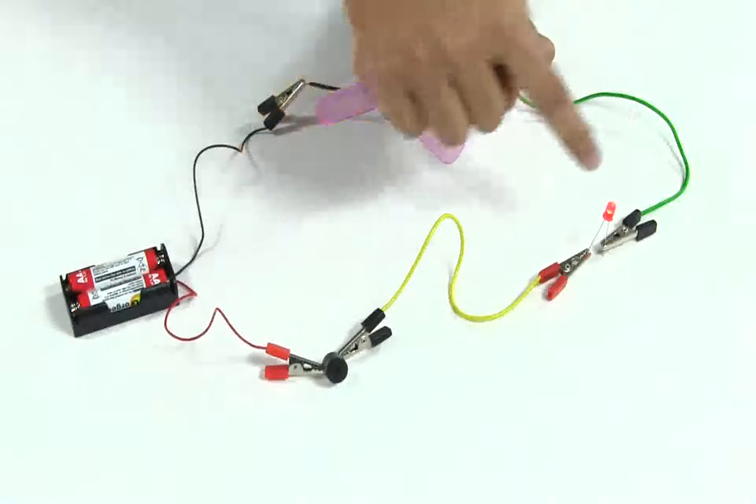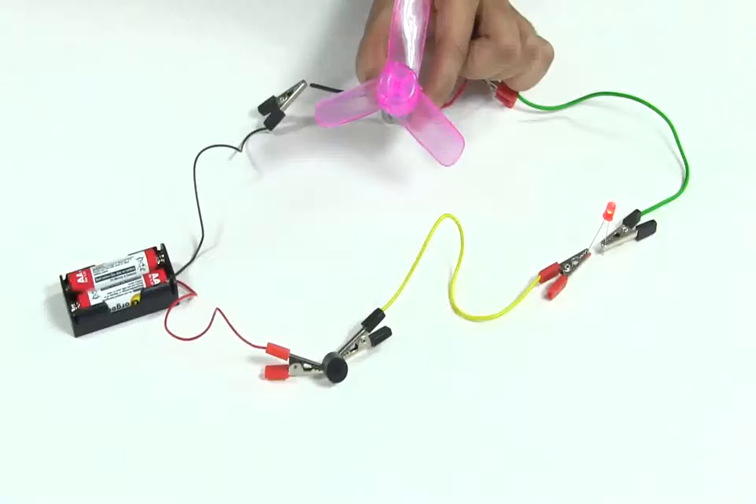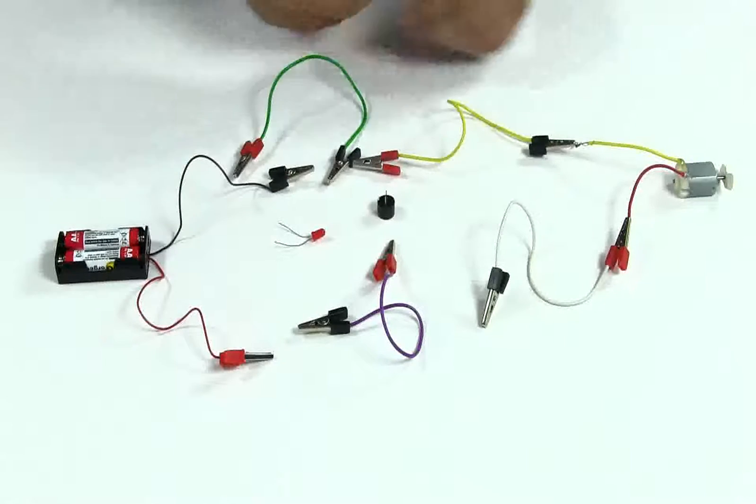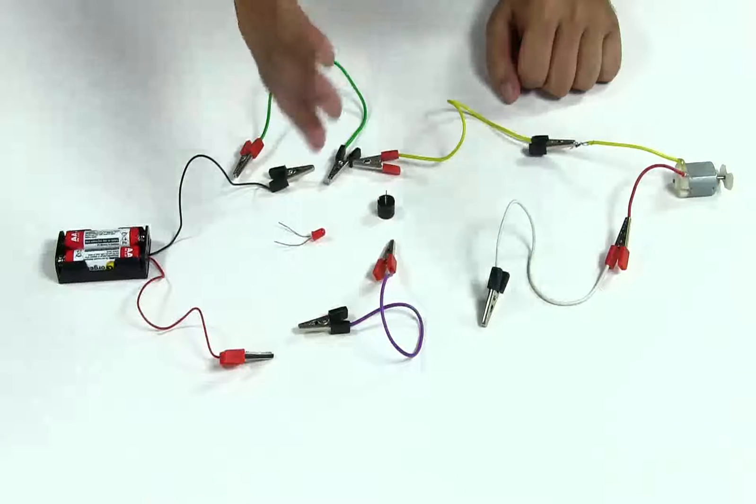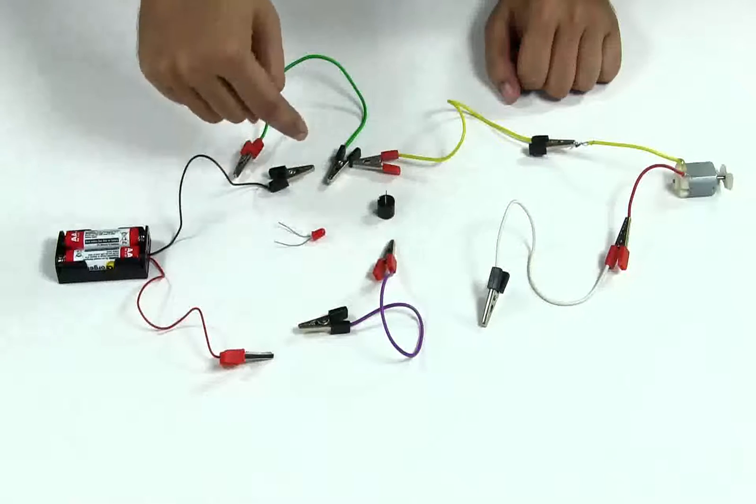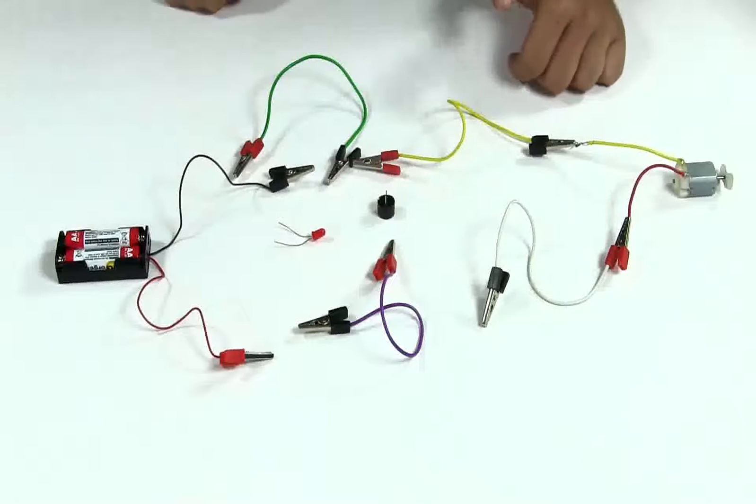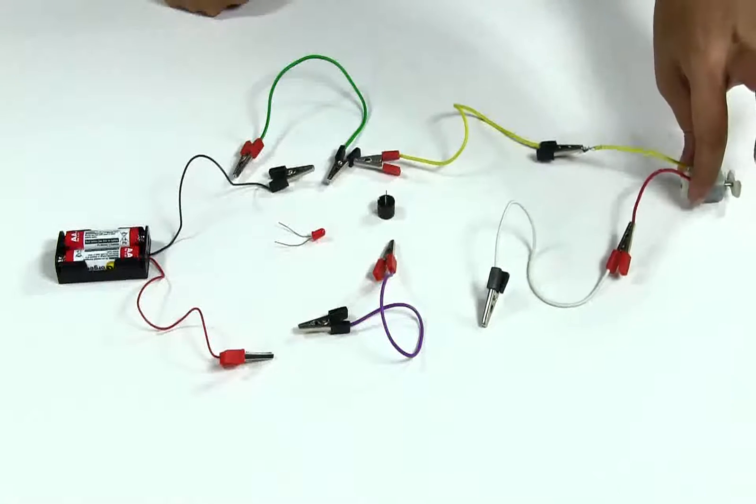In this experiment, we are going to see how to make a parallel connection. In a parallel connection, the elements have their individual loops. For example, I am attaching this motor to this buzzer.